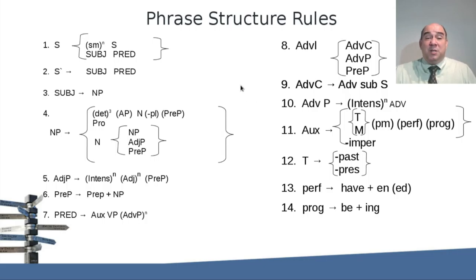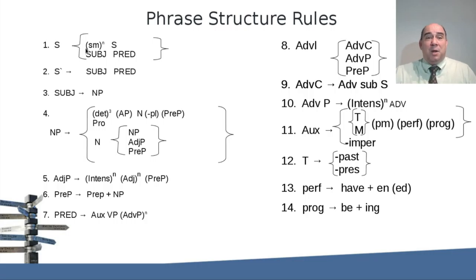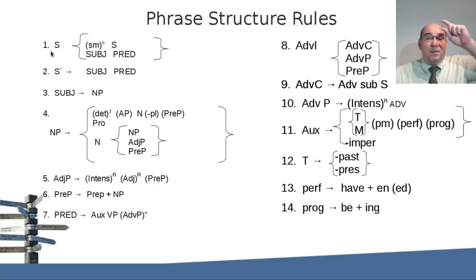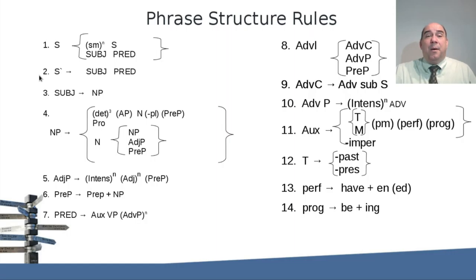Here are the more specific phrase structure rules I'll be covering in the next two videos. The first is the sentence, which is basically a subject and a predicate, with a possible sentence modifier at the top of the tree. The sentence breaks down into subject and predicate, and the subject is broken down into a noun phrase.